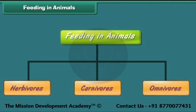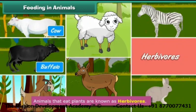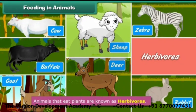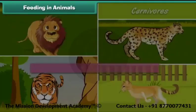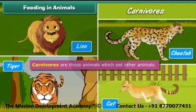Animals that eat plants are known as herbivorous. Examples include cow, buffalo, goat, sheep, deer, zebra, and rabbits. Carnivorous are those animals which eat other animals. Examples include lion, tiger, cheetah, and cat.